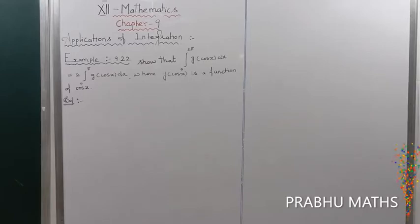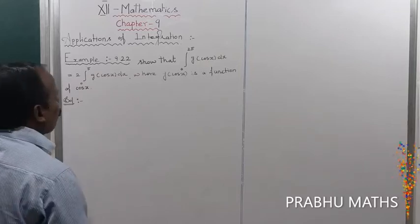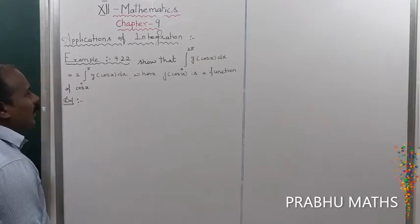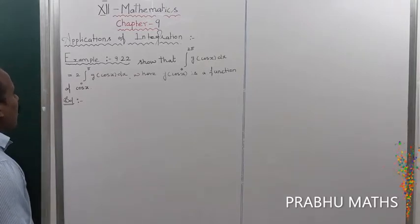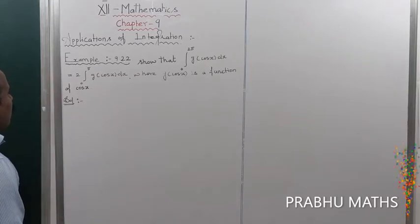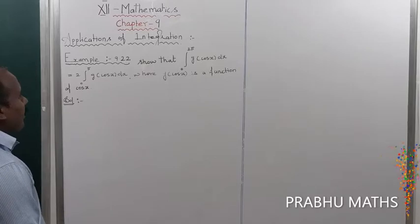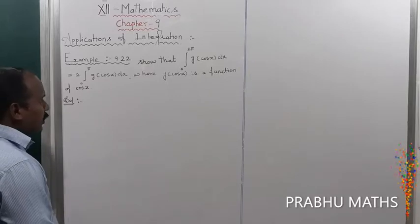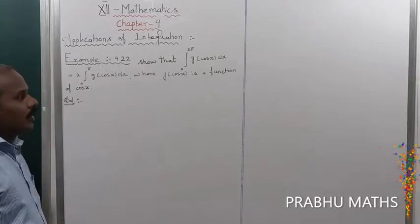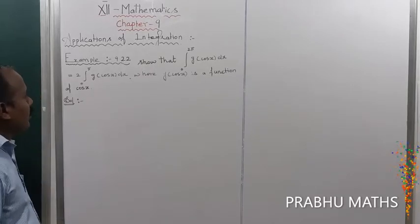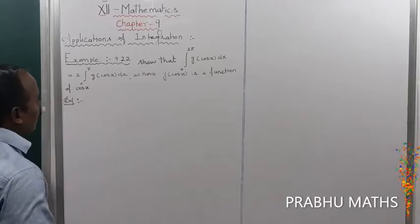Example 9.22: Show that integral from 0 to 2π of g(cos x) dx is equal to 2 times of integral from 0 to π of g(cos x) dx, where g(x) is a function of cos x.